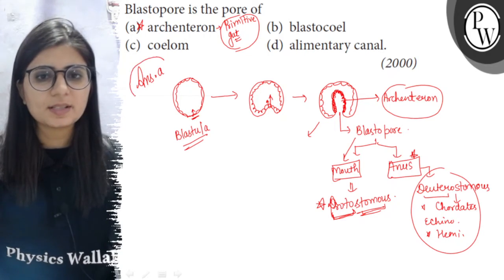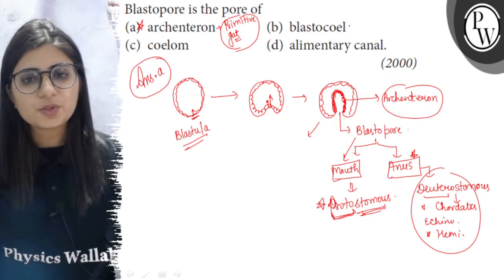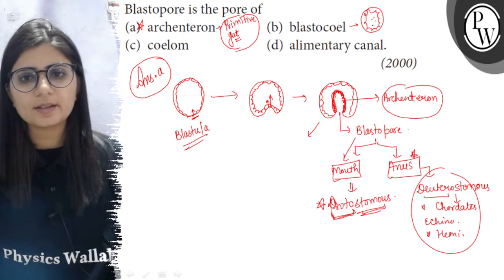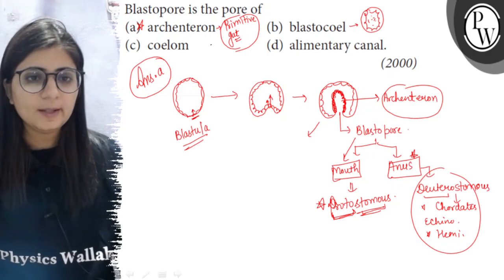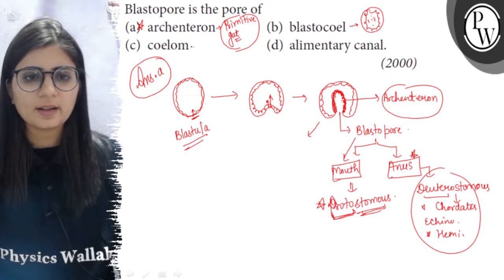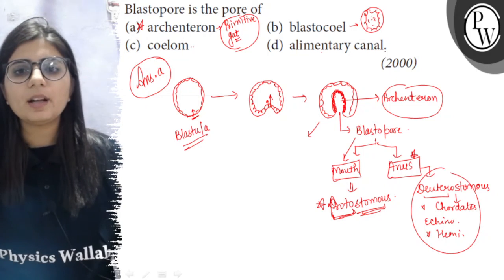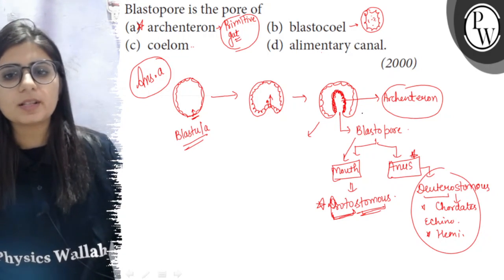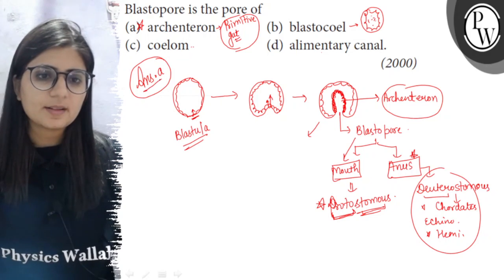The right answer of this question is option A. While blastocoel is the cavity of blastula. If this is the blastula, then its cavity is called the blastocoel. And coelom is the body cavity lined with mesoderm. It is entirely a different thing. And alimentary canal will be formed later on by further development of this archenterone. So the right answer is option A.